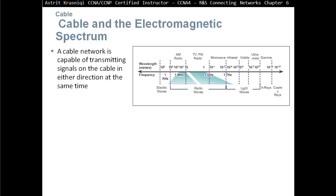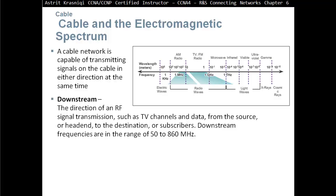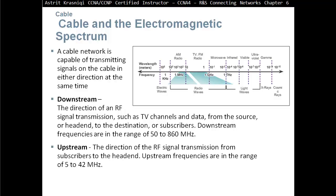A cable network is capable of transmitting signals in either direction at the same time — full duplex. Downstream is the direction of RF signal transmission, such as TV channels and data, from the source or headend to subscribers. Downstream frequencies are in the range of 50 to 860 MHz. Upstream is the direction of RF signal transmission from subscriber to the headend; upstream frequencies are in the range of 5 to 42 MHz. The smaller upstream range means slower uploading, while the larger downstream range means faster downloads.